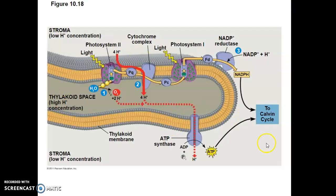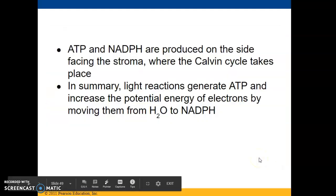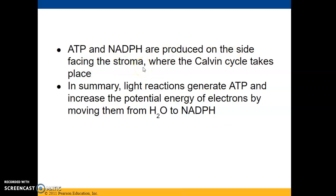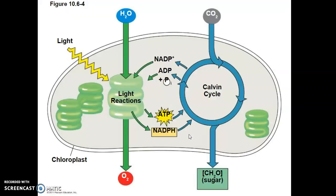Here's our overview diagram. ATP and NADPH are produced on the side facing the stroma where the Calvin cycle takes place. In summary: the light reactions generate ATP and increase the potential energy of electrons by moving them from water to NADPH. And that's where we're going to end.